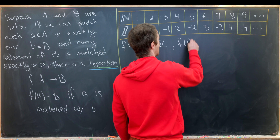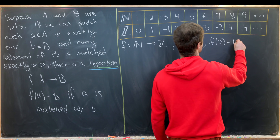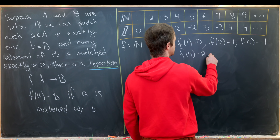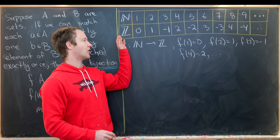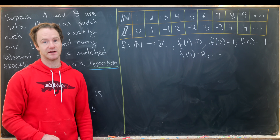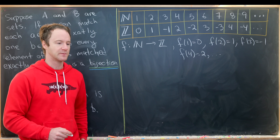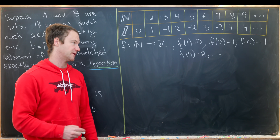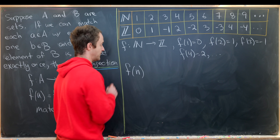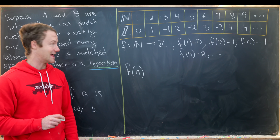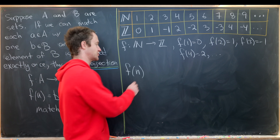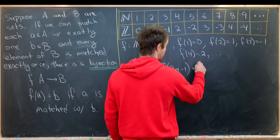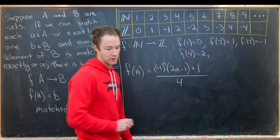With some words you could argue this is a one-to-one correspondence — a bijection. But let's have a formula whenever possible. In fact, there is a formula: f(n) = [(-1)^n · (2n - 1) + 1] / 4, where n is any natural number. There are a few things to check: first, that this always gives us an integer (since we have a 4 in the denominator, it's not immediately clear); and second, that we achieve every integer exactly once.